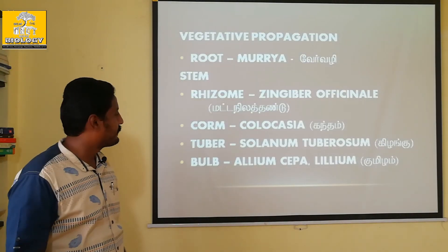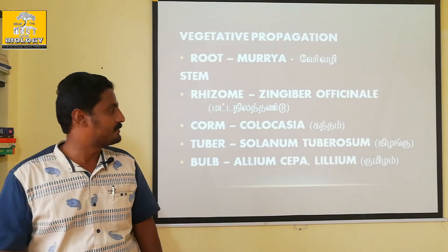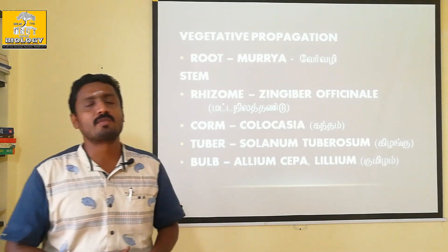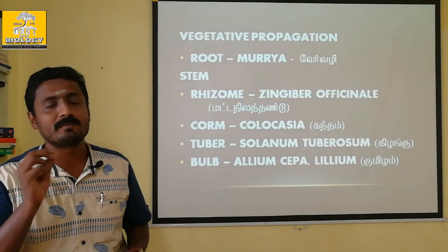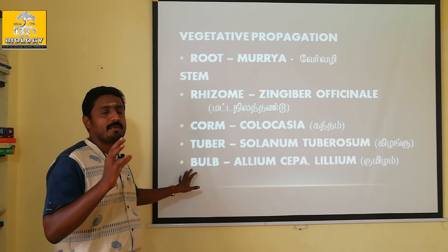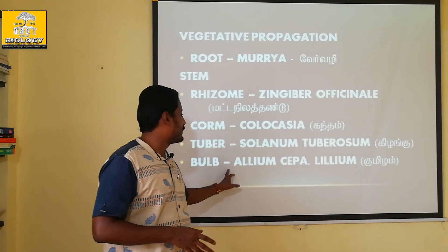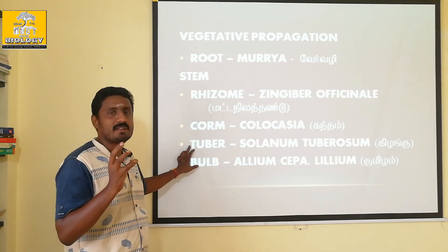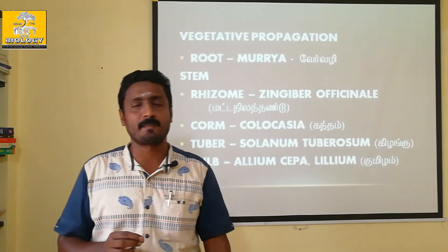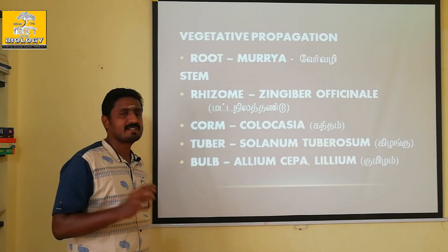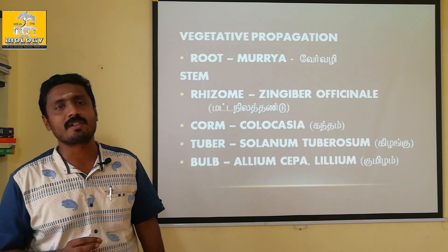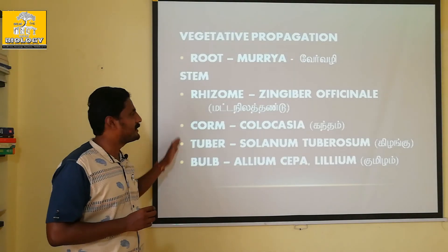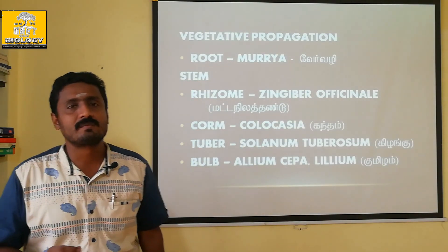This is a bulb. Examples include Allium cepa and Lilium — these are bulb-like structures. You can see the bulb-like structure. All of these structures are different from one another.